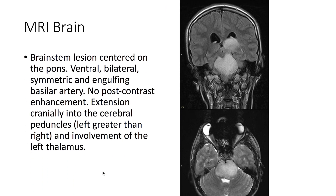Taking a look at the MRI of the brain — here the FLAIR image — we note a brainstem lesion centered on the pons. It's ventral, bilateral, symmetric, and engulfs the basilar artery. There's no post-contrast enhancement, and there's extension cranially into the cerebral peduncles, left greater than right. There's also involvement of the left thalamus.